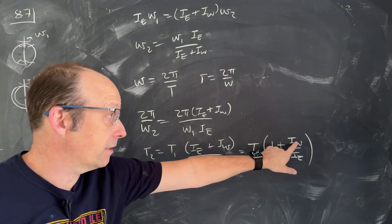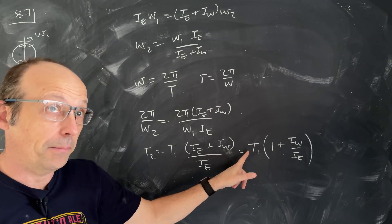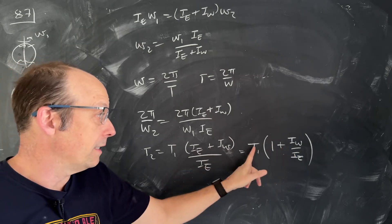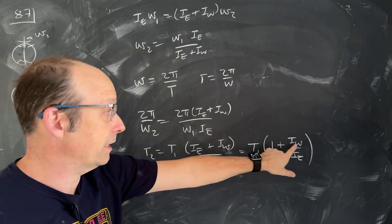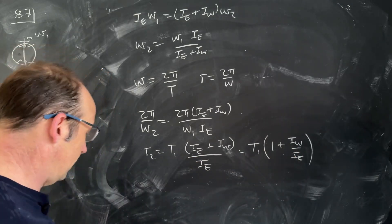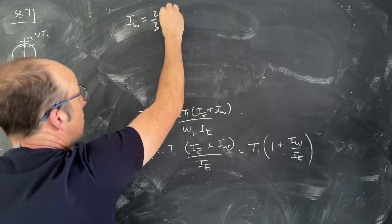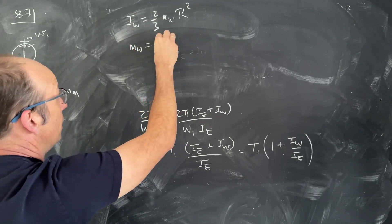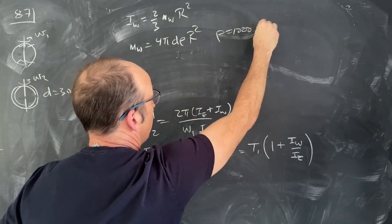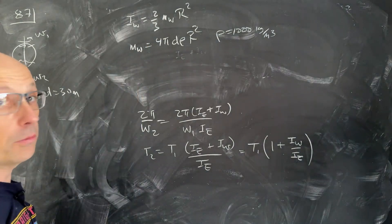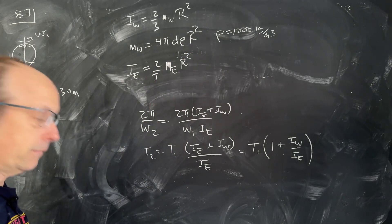The ratio I_water/I_earth tells us the fractional increase in the day. To summarize the formulas: I_water = (2/3)·m_water·r², where m_water = 4·pi·d·rho·r². And I_earth = (2/5)·M_earth·r². With rho = 1000 kg/m³ and d = 30 m, let's plug numbers into Python.